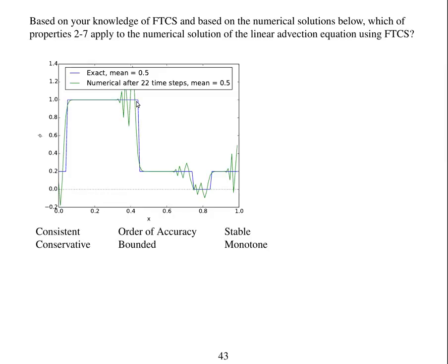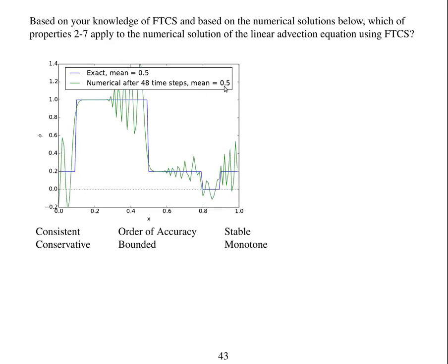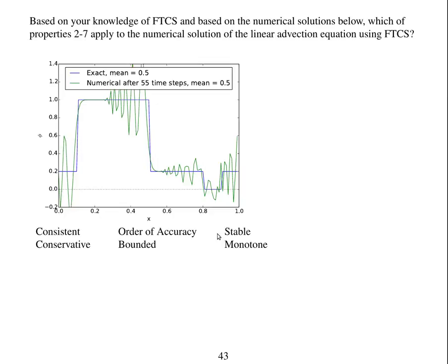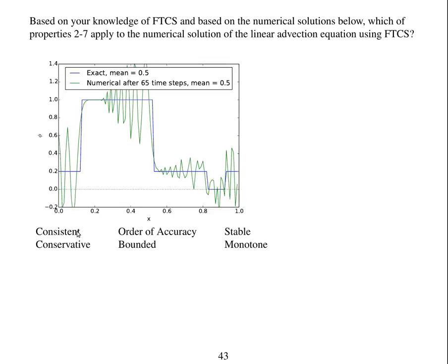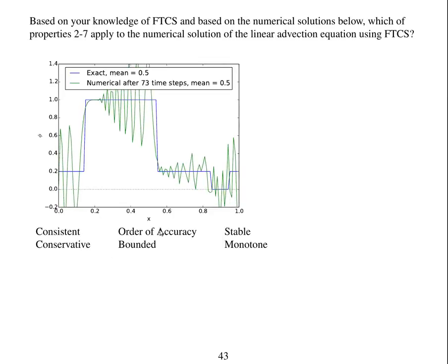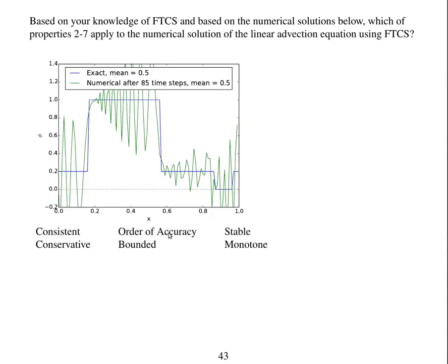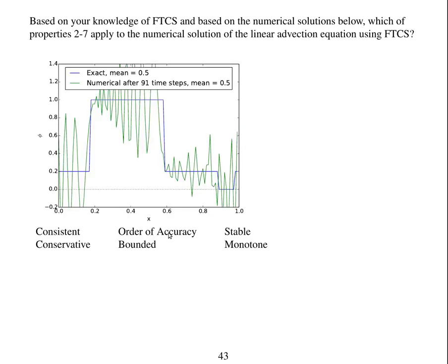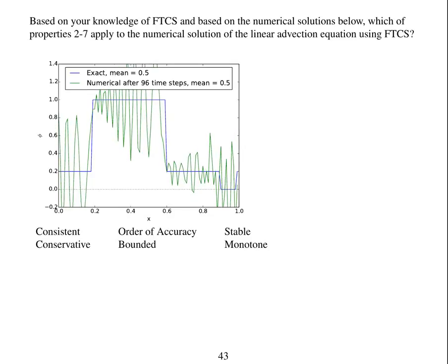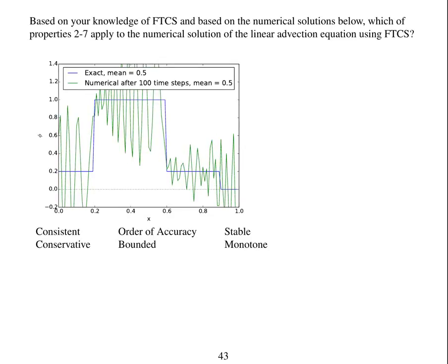It's showing the time step and this shape. The blue line is the exact solution and the green line is the numerical solution. You can see that the total integrated amount of the quantity is remaining stable. So have a think about whether this scheme looks as if it's consistent, conservative. You won't be able to know the order of accuracy by looking, but you can look at that if you review previous chapters. Is it bounded? Is it stable? Is it monotone?